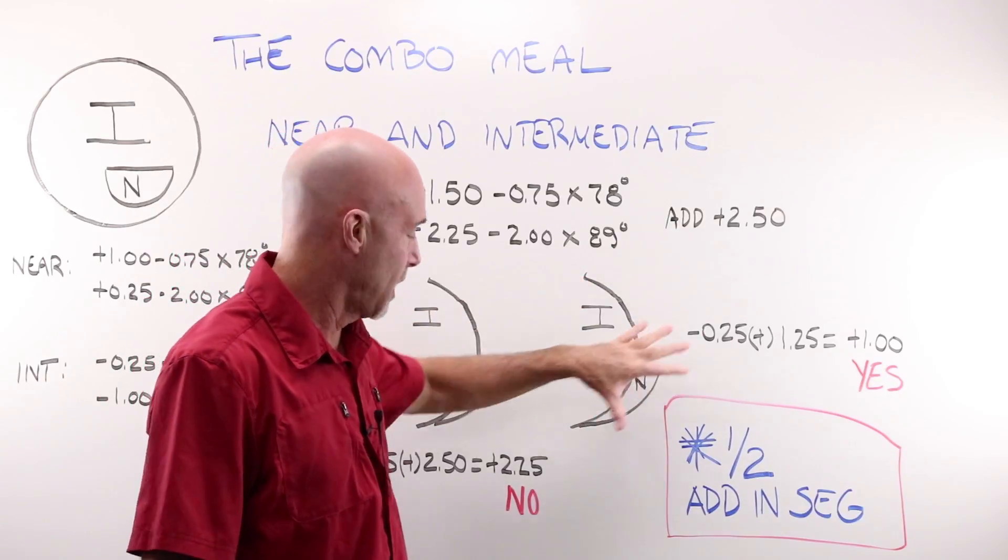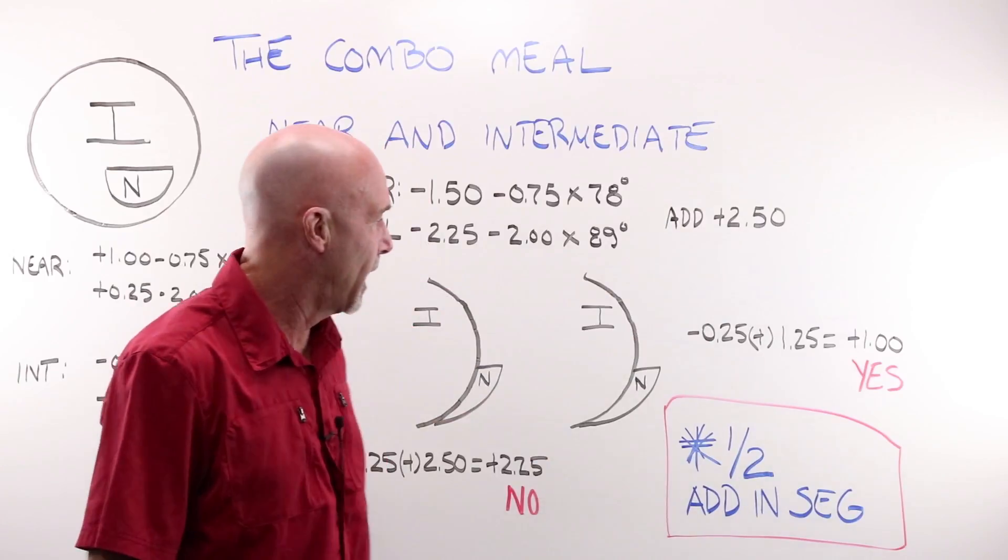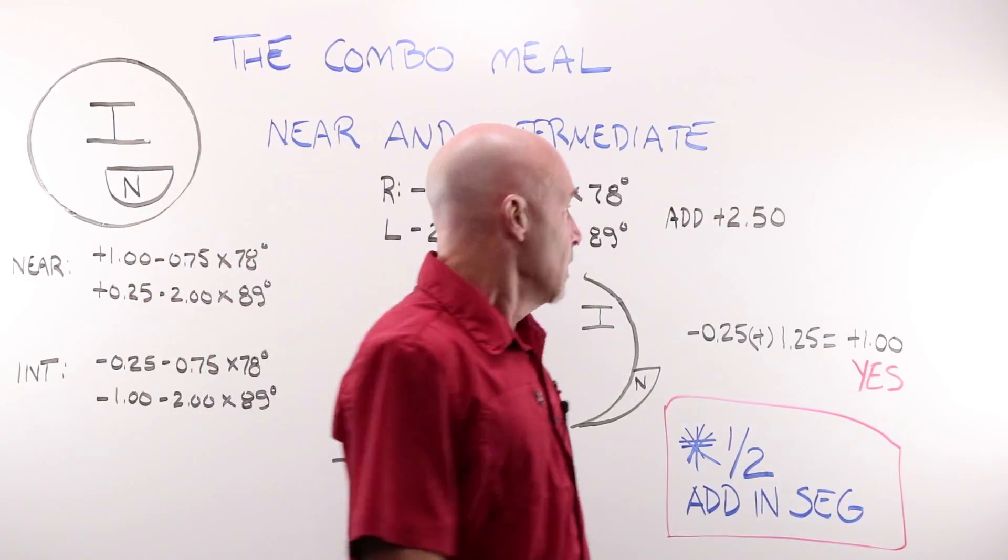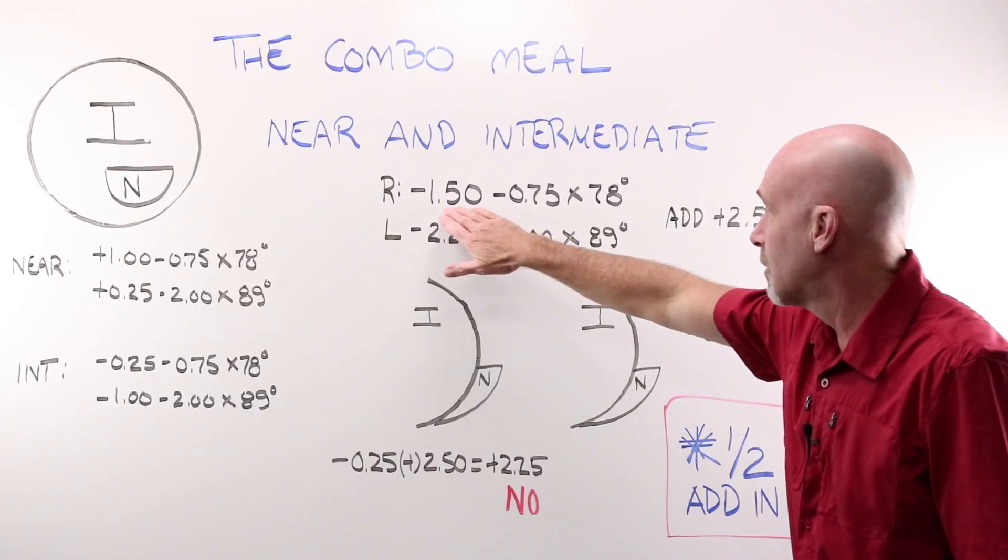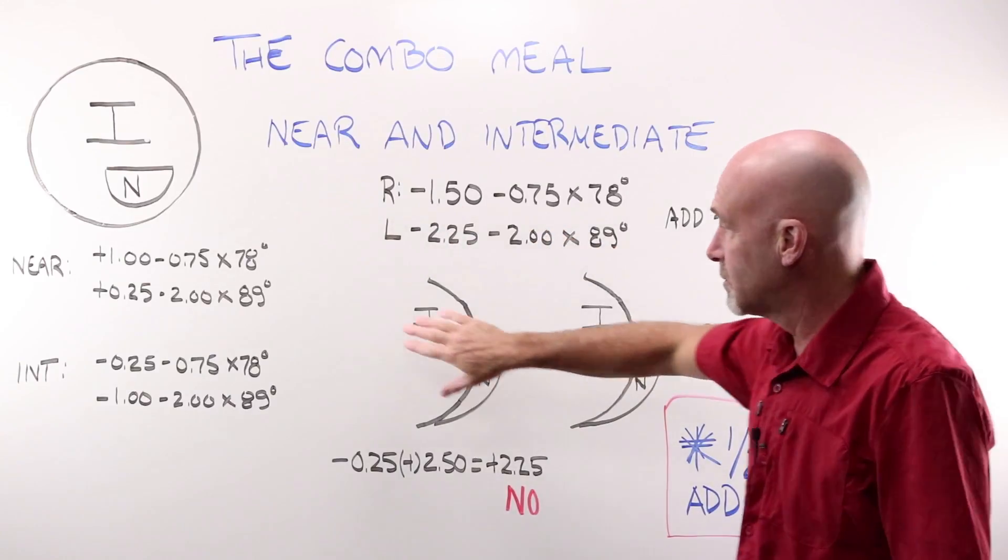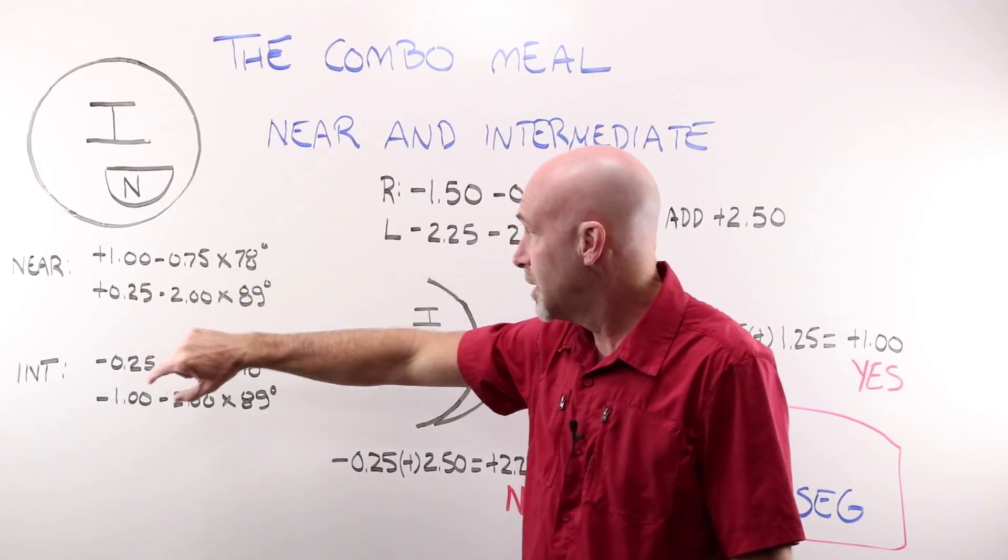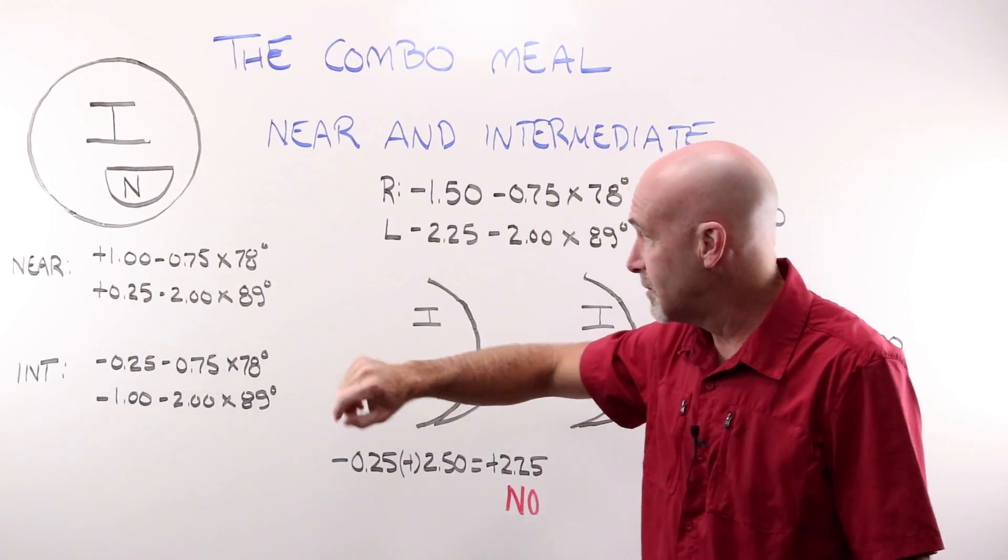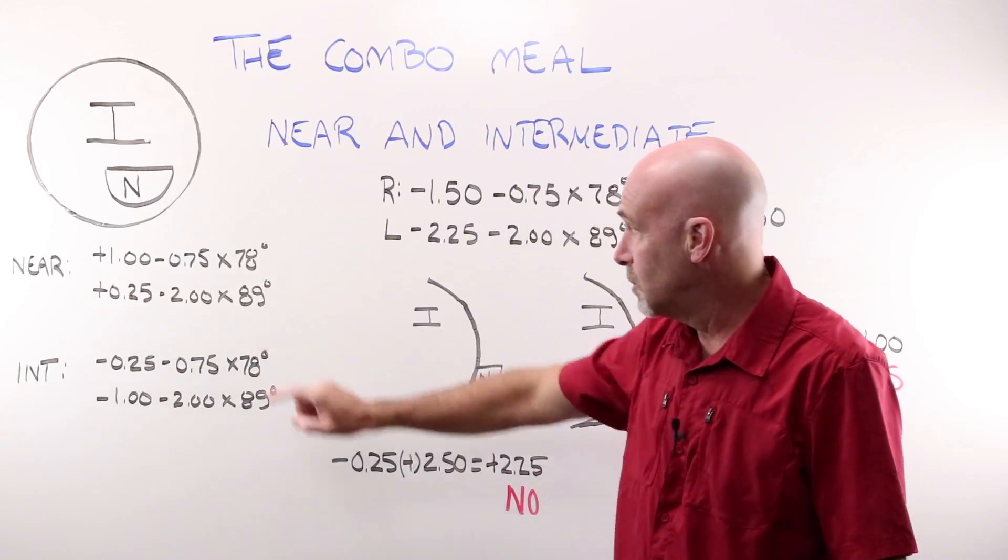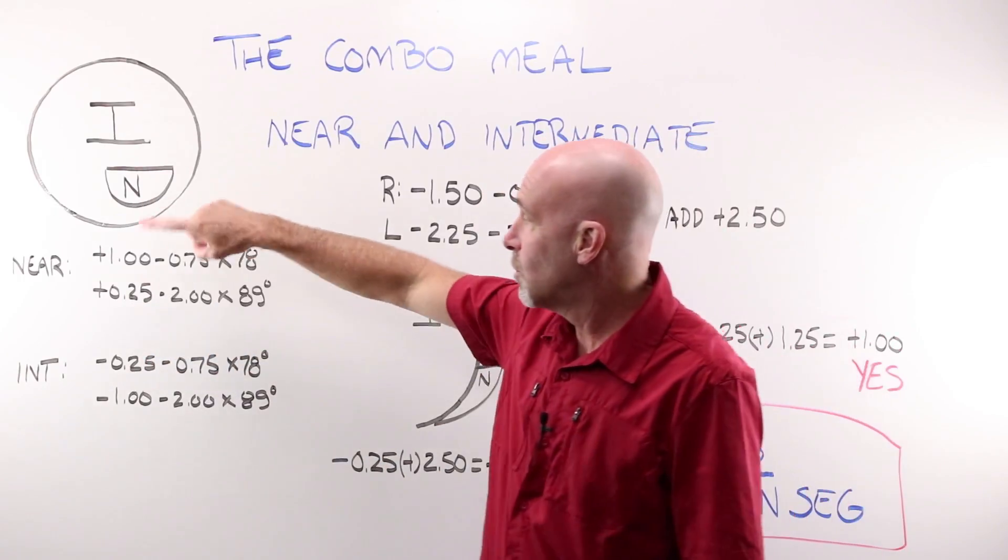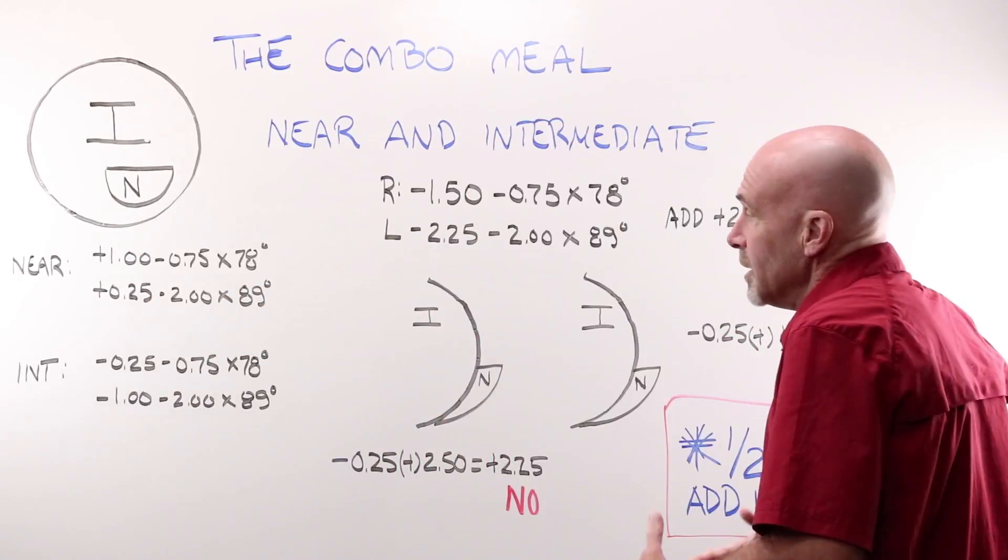If we crunch the numbers for near, we would take our sphere and add our 250 and we'd end up here. We'd end up at a plus one, minus 75 at 78 and a plus 25, minus two at 89 for a near, if you were making a single vision pair of readers. Now, if I was making an intermediate pair,